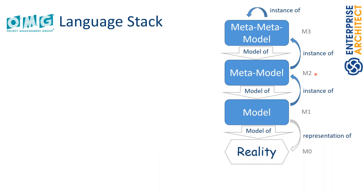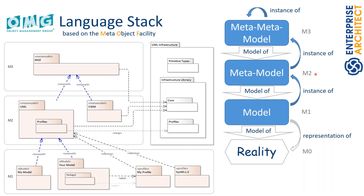This is the OMG's language stack, based on the Meta Object Facility (MOF), which is a language on level M3. The MOF itself is part of the core of UML — it is the UML class diagram described in the UML class diagram, used to describe the modeling language UML. On level M2 we define the modeling language UML, and we can use MOF to model other modeling languages like CWM, the Common Warehouse Model, and others.